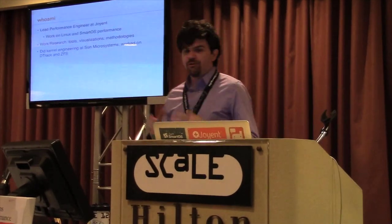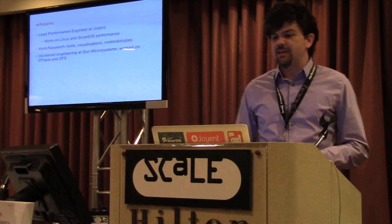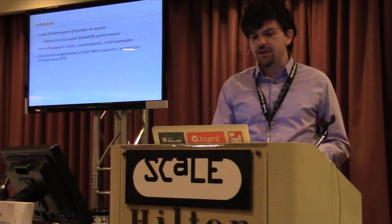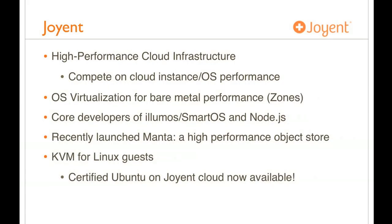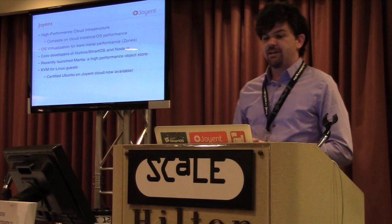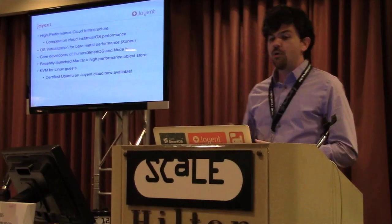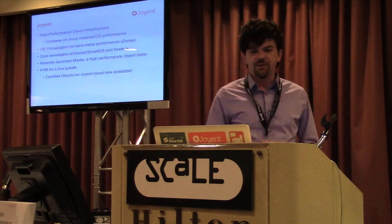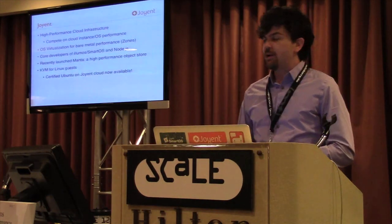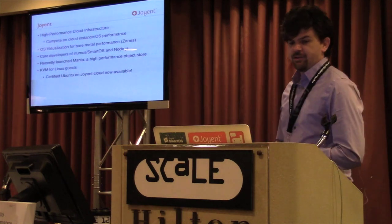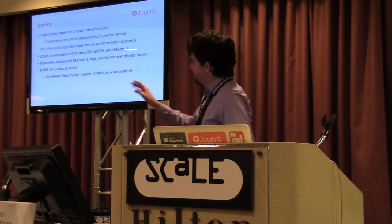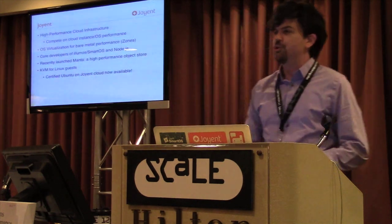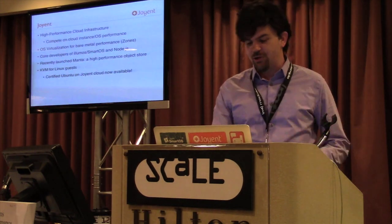You might know me from various tools I've written or visualization technologies. I previously did kernel engineering at Sun, where I worked on DTrace, ZFS, and performance. Joyent is a high-performance cloud infrastructure company. We compete on cloud instance and OS performance. OS virtualization for bare-metal performance — that's Zones, one of Solaris's big features. We're core developers of Illumos, SmartOS, and Node.js. Just last Thursday we launched Certified Ubuntu on Joyent, which is really fun — it's got a much newer kernel.